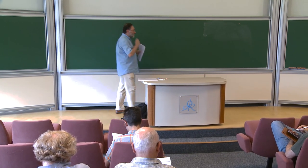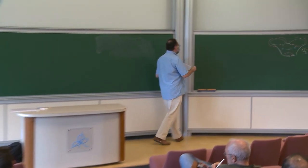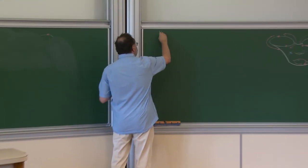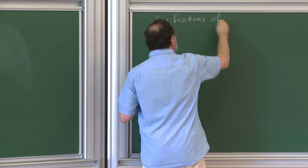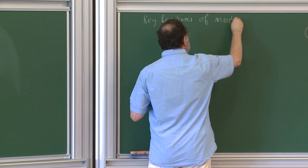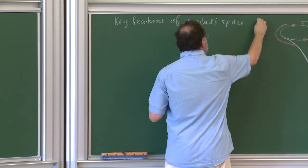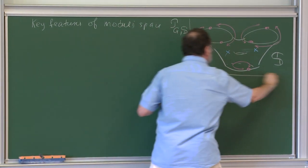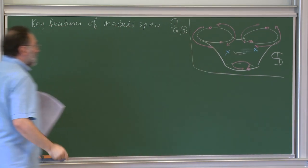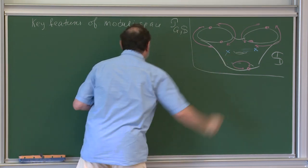Let me start the last lecture. First of all, I wanted to remind you some key things — the key features of moduli space we're talking about. It's moduli space PGS, which corresponds to the decorated surface S with red marked points, pinning given by red arrows, and punctures here.